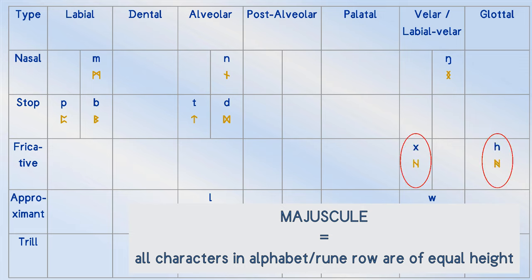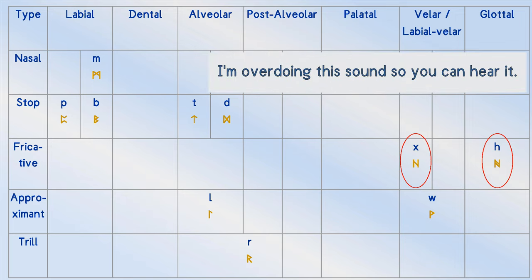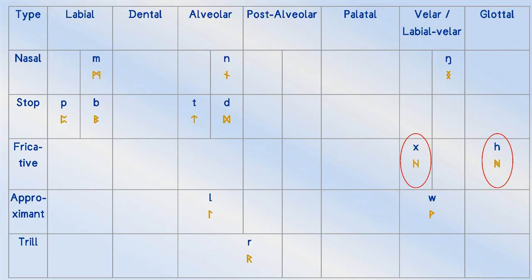As English continued to develop, the velar fricative H began to see competition from the glottal H. Could this be what gave rise to the double-barred hail rune alongside its single-barred form?